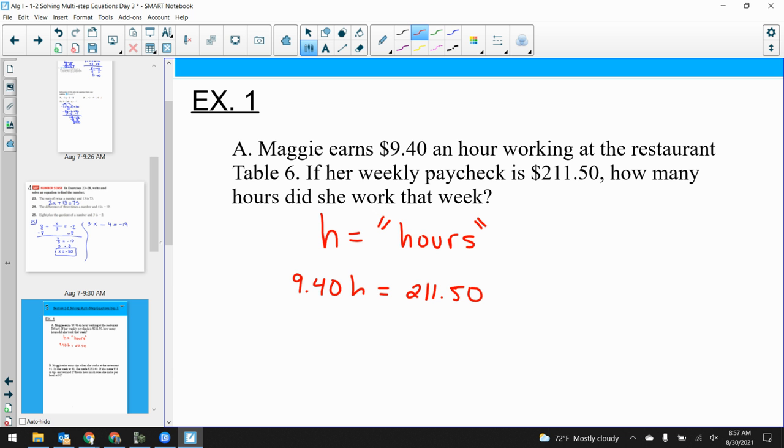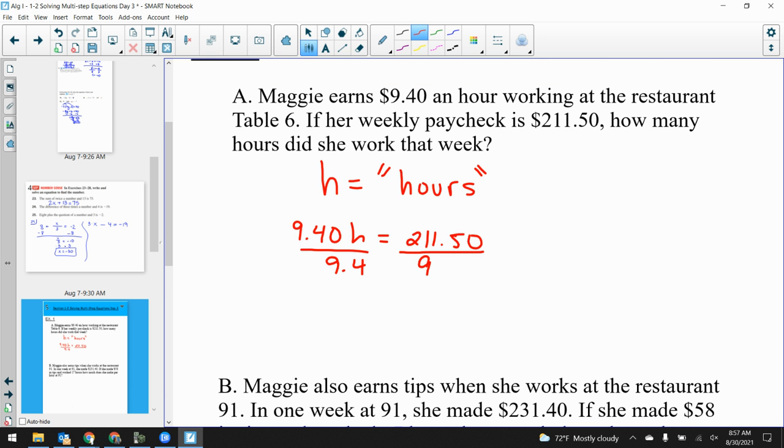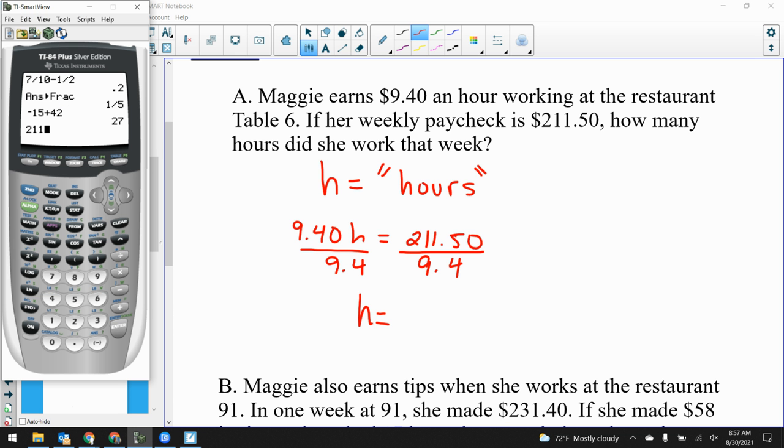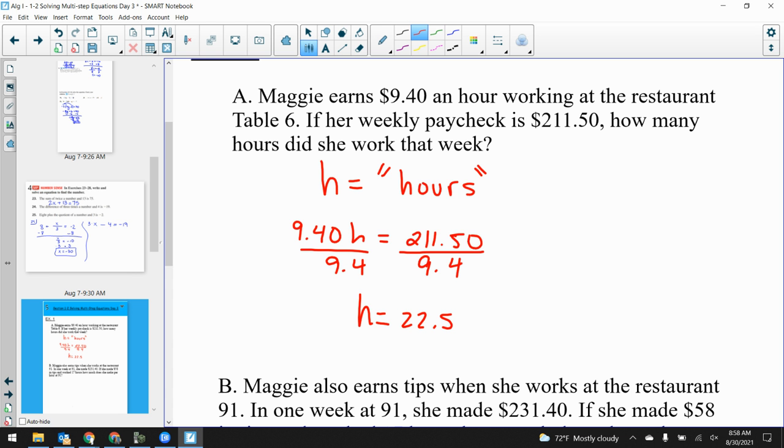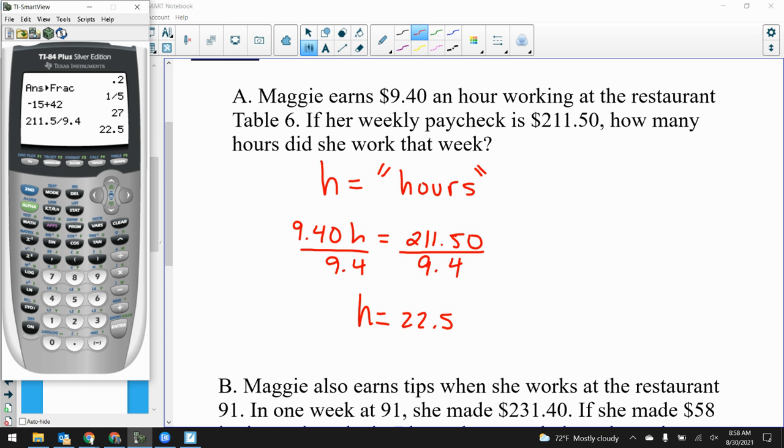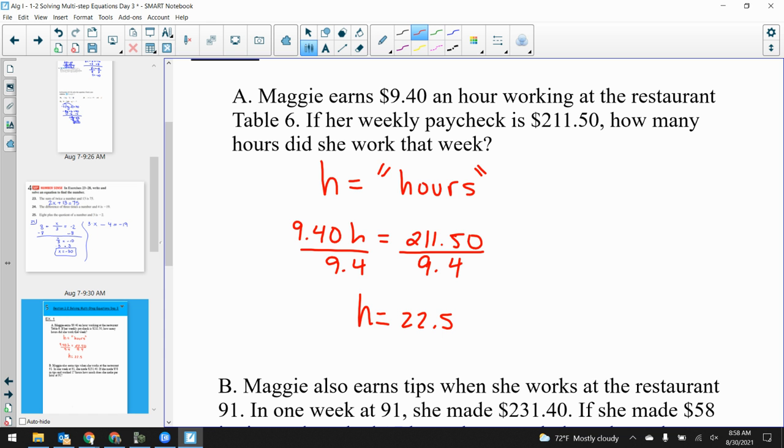We divide over the 9.4. H is equal to $211.50 divided by 9.4, which equals $22.50. Put it back into context. Not just solve the problem, state what the answer means. She worked 22 and a half hours. Write a sentence. 22.5 hours last week.